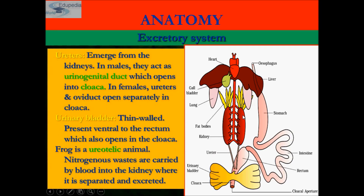Now, the ureter — two in number — emerges from the kidney. In males, the ureters act as a urinogenital duct which opens into the cloaca, the outside opening. But in females, the ureter and oviduct open separately in the cloaca. This is the sole difference between the male and female frog.